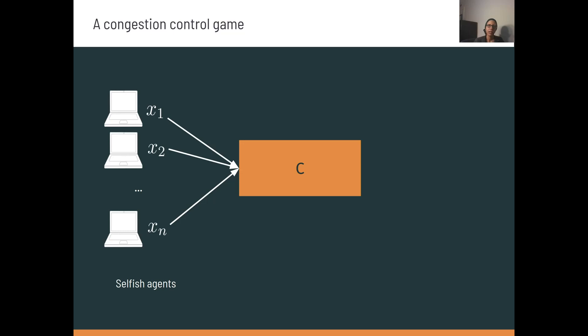We now want to understand whether heterogeneous agents will have good outcomes when playing against each other. So in order to understand this, let's look at agents in the context of a network game. In this game, at each time step, each agent sends some number, xi, of packets into a network that has a single bottleneck link with capacity z.